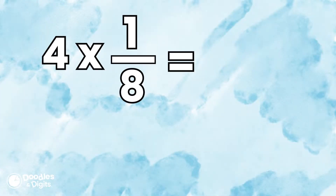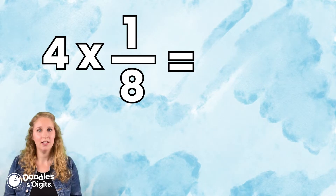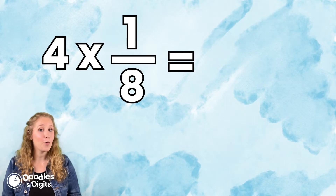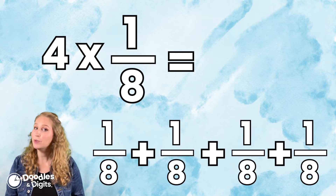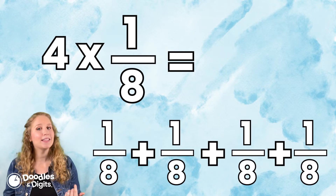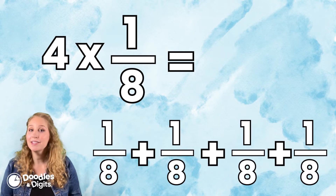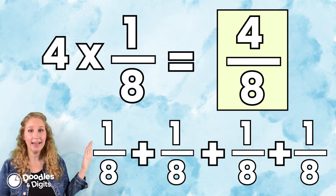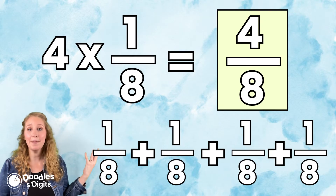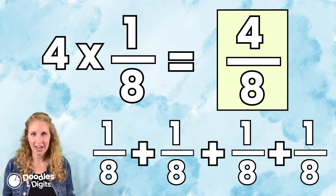All right, let's see if we can solve this one with repeated addition. Four times one eighth. So we're going to add one eighth four times. One eighth plus one eighth plus one eighth plus one eighth equals four eighths. The denominator doesn't change.